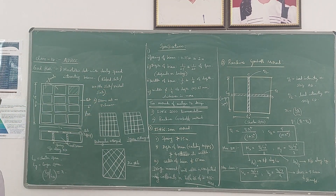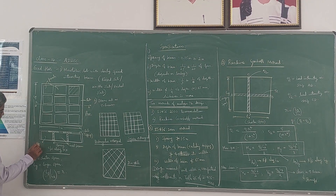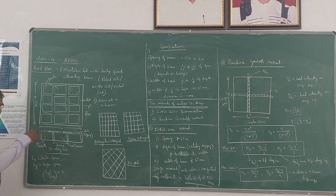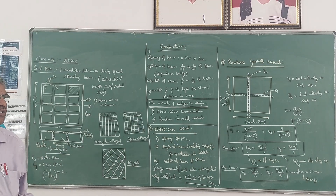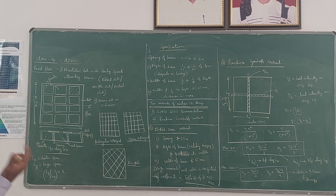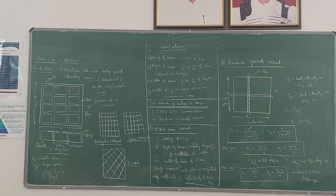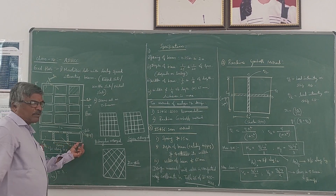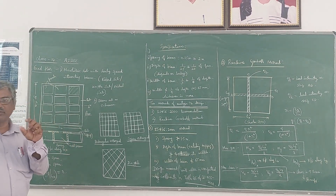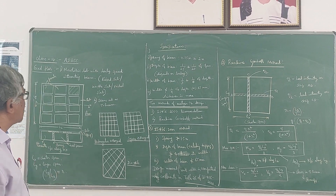These slabs are called ribbed or waffle slabs because concrete is removed in the tension zone — there is no concrete in the void regions, which saves concrete. That is one advantage. If you want to avoid major beams in any hall, you can go for grid floors. Grid beams are very small compared to major beams, and that is the advantage.